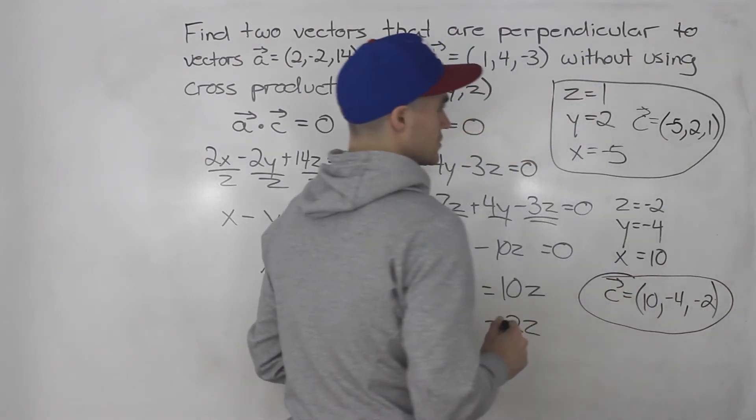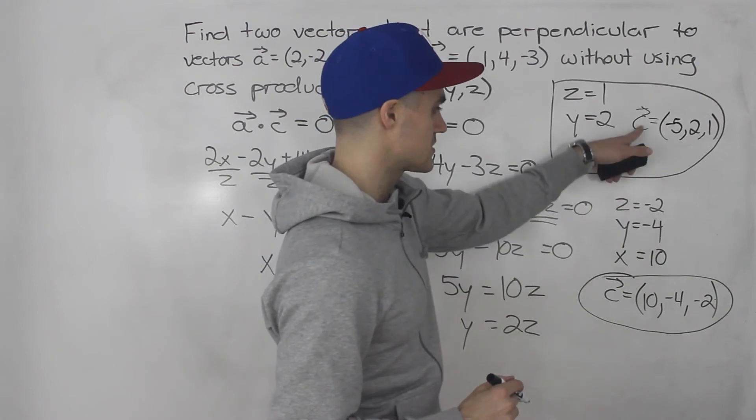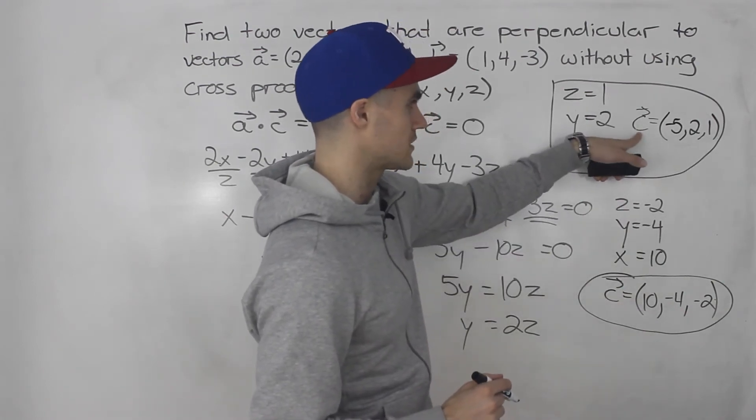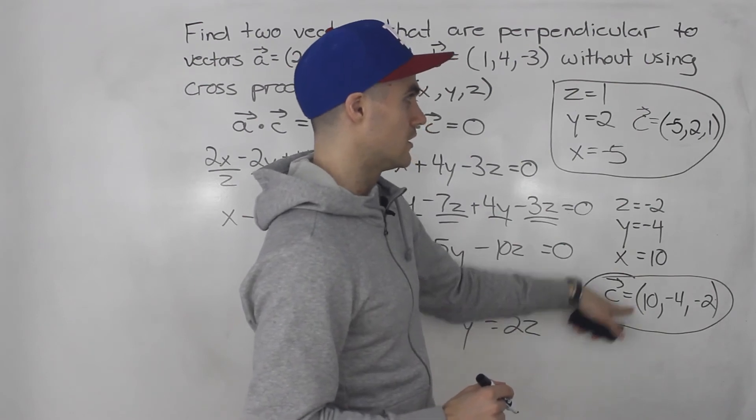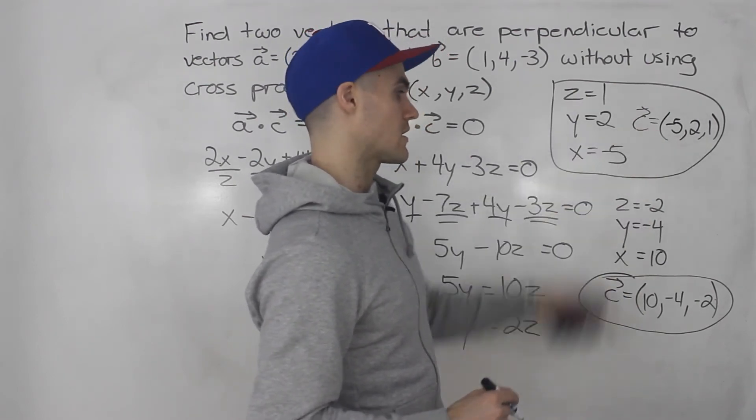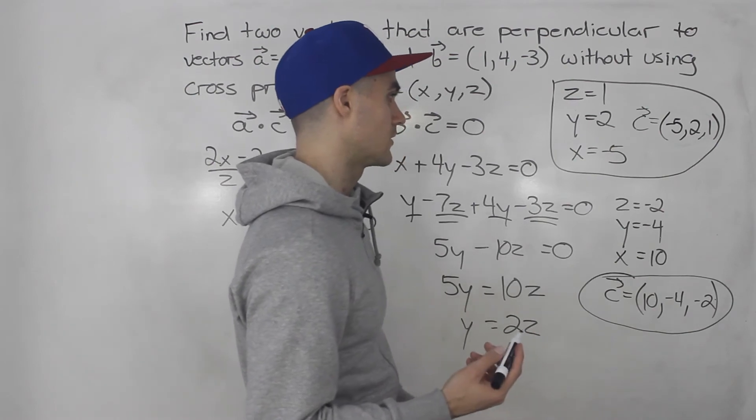And you could have also noticed how these two vectors are co-linear. We're basically multiplying this vector by negative 2 to get this one. You could have also took this vector and then multiply it by any scalar to get another one.